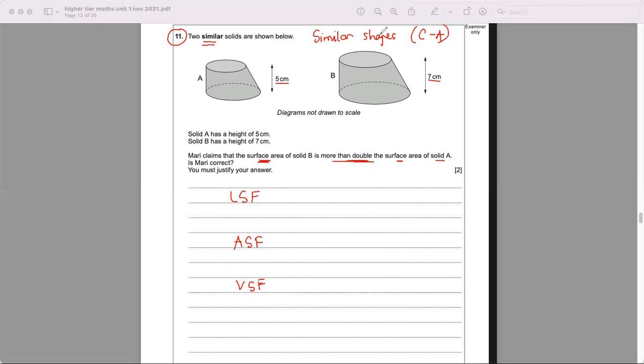Now this is to do with surface area so you know it's nothing to do with volume scale factor. In fact, if you're able to work out the area scale factor you'll be able to see if it's more than double. So if that is more than two or less than two then you know she's correct or not correct.